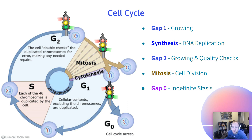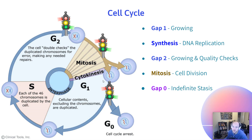After that, we're in G2. This is kind of quality control, where the cell will grow a little bit, but mostly it's making sure that synthesis happened well and that the conditions are right to enter cell division. Then we enter mitosis, where we'll split into two new daughter cells that will both be in G1.